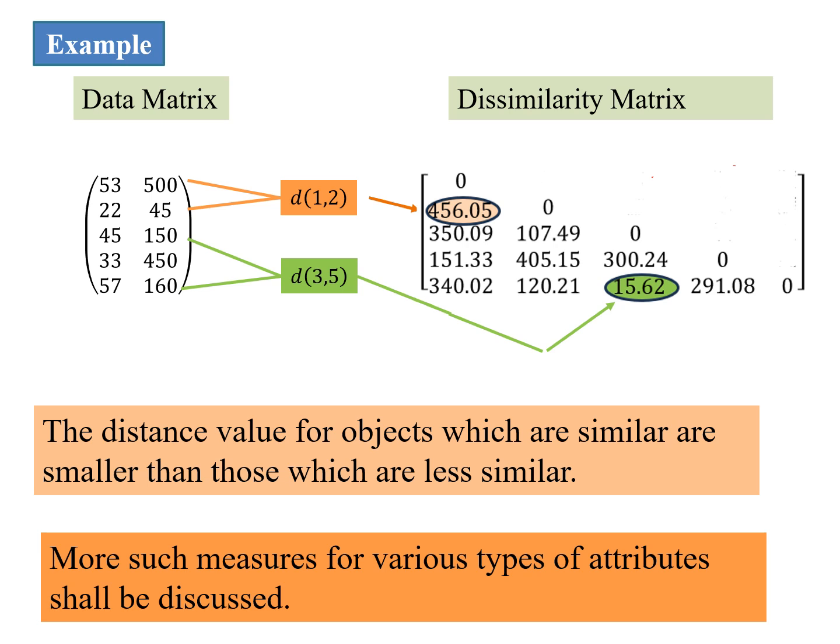We would just look at the matrix in slightly more detail. We look at this value 456.05, which is the value of D(1,2), rows 1 and 2. We look at another value which is quite small, 15.62, which is the difference between the third row and the fifth row data points. We can also see that for the values of the third row and the fifth row are so much more close to each other: 150 and 160. The distance is around 16.